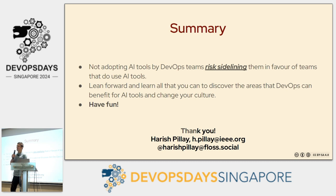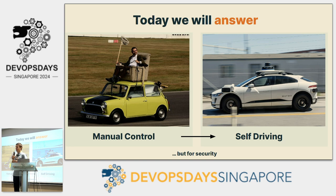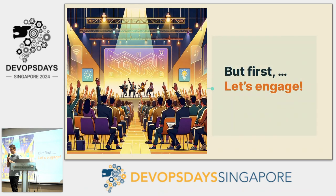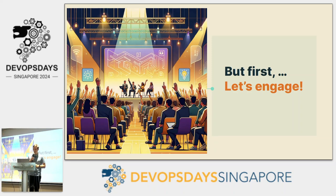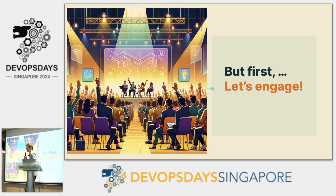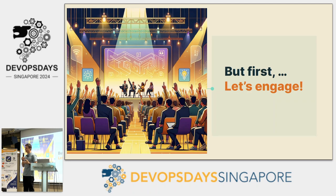I'm Stefan, CTO at GuardRails, where we make security painless for humans by building the first-ever AI security engineers. Today: how do we get from manual control to self-driving security, and what does this have to do with AI security agents? First, I want to engage: if you write code in your organization that is crucial for your company, please raise your hand. If you think this code should be secured, keep your hand up. And for everybody — writing code or not — have you ever dealt with security and found it to be frustrating? Raise your hand. Look around — it's a shared experience for all of us.